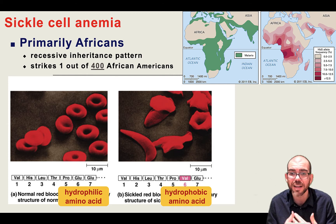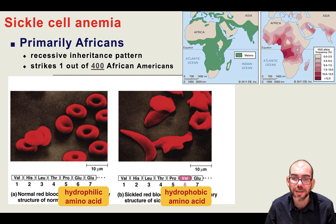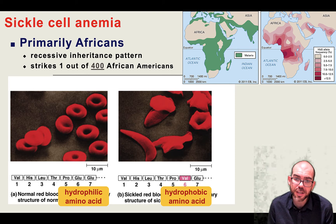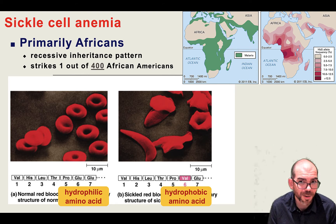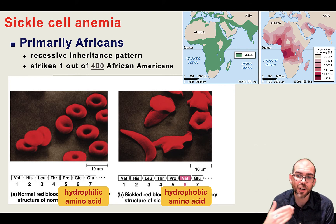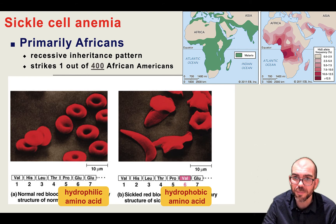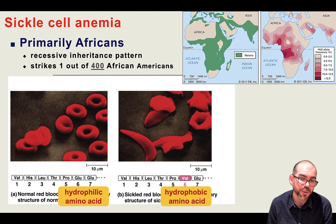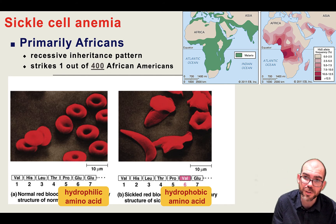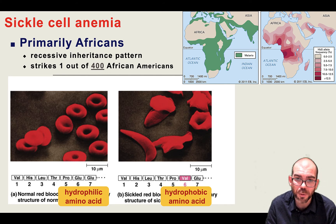But sickle cell anemia actually has an evolutionary advantage. If you look at the maps here, the map on the left shows where malaria is present, and the map on the right shows the highest frequency of sickle cell — they overlap. It turns out that if you have sickle cell anemia, you are not going to get malaria. Having the sickle cell anemia gene confers an advantage to survive malaria. In evolution, all that matters is that you survive and reproduce — this disease can actually give you an advantage when healthy individuals can get malaria and die before they reproduce.